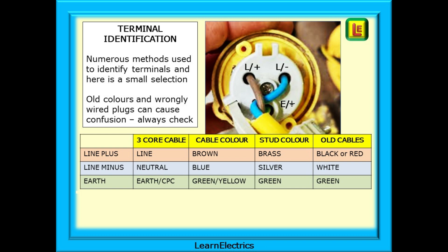Although I'm using the popular brown, blue, green and yellow wiring, there are numerous methods used to identify conductors and terminals, and here is a small selection. Old colours and wrongly wired plugs can cause confusion, so always check. We should not use the naming convention of line and neutral since there is no neutral in this system. For ease of understanding I always call the brown conductor L plus, and this is often marked at the terminal. Then the blue wire, but the terminal is frequently unmarked so I always call it L minus as shown on the photo.